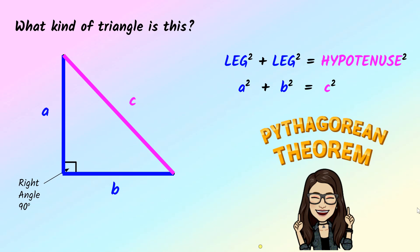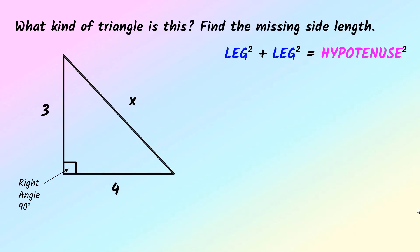Let's try an example. Here we have a right triangle. First I need to identify which sides are the legs and which is the hypotenuse so I can plug it into A squared plus B squared equals C squared. Three is one of my legs, four is another leg, and X is the hypotenuse. We'll call three A and four B, but it doesn't matter which leg is A or which leg is B as long as the hypotenuse is always C.